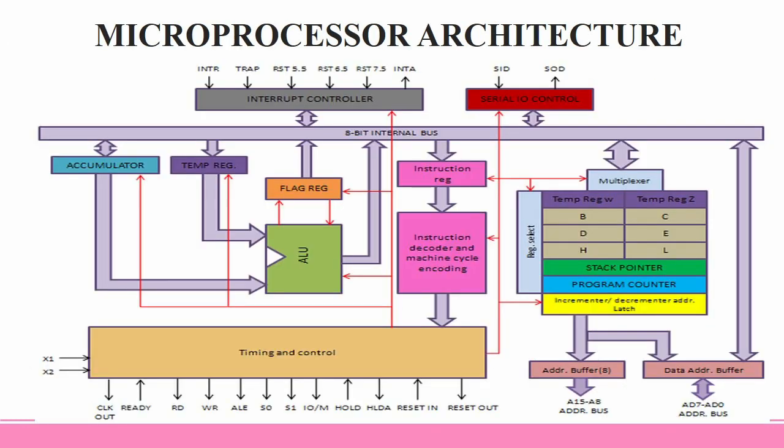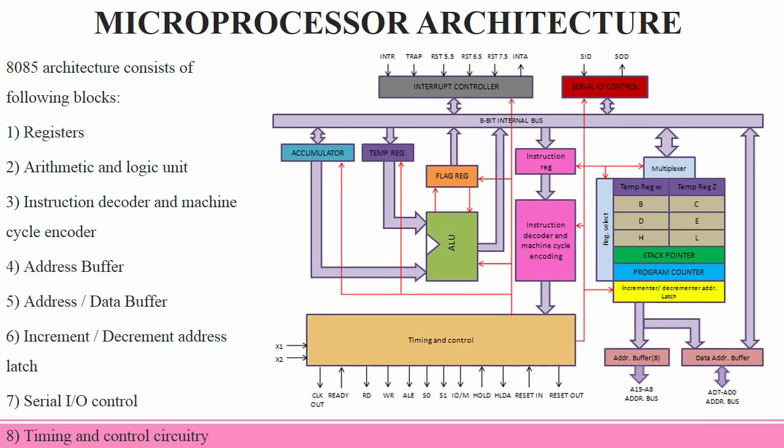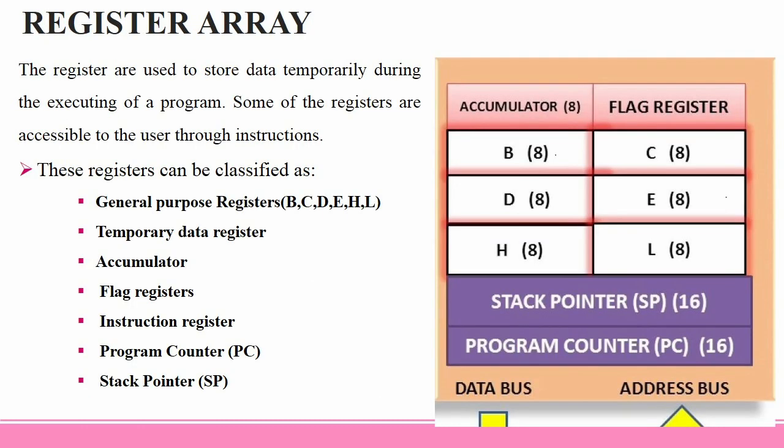This diagram shows the 8085 microprocessor architecture. The 8085 microprocessor architecture consists of the following blocks: Registers, Arithmetic and Logic Unit, Instruction Decoder and Machine Cycle Encoder, Address Buffer, Address and Data Buffer, Increment and Decrement Address Latch, Serial I/O Control, and Timing and Control Circuitry.